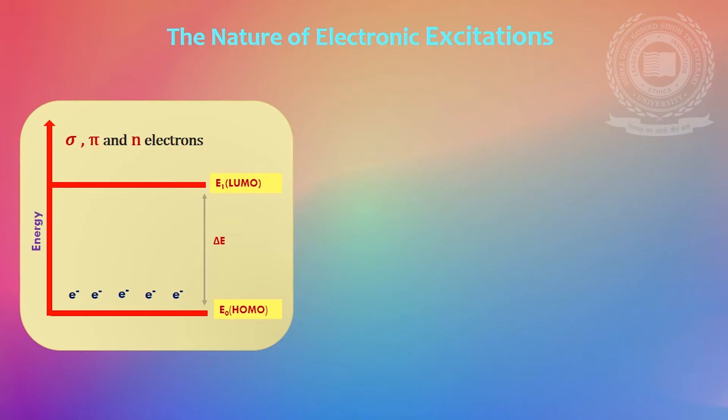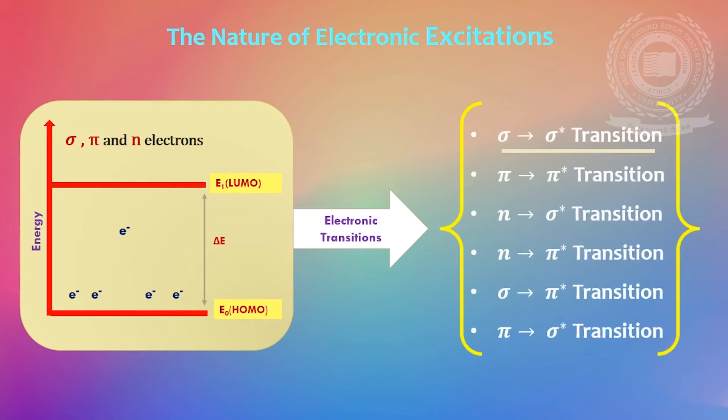Next, the nature of electronic excitations. In ultraviolet visible spectroscopy, molecules undergo electronic transitions involving sigma, pi and n electrons. In the molecules, electrons may undergo several possible transitions of different energies. These are sigma to sigma star transition, pi to pi star transition, n to sigma star transition, n to pi star transition, sigma to pi star transition, and pi to sigma star transition.